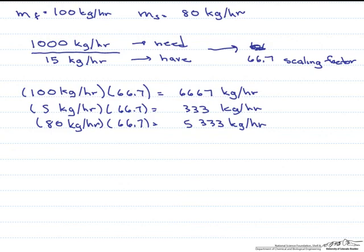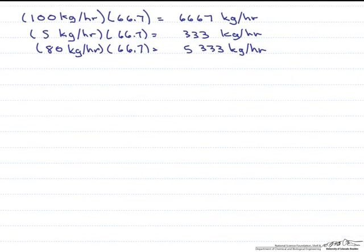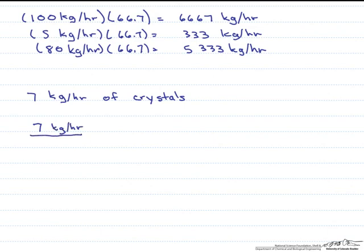What if instead though, your system was designed so you could only handle 7 kg per hour of crystals? Now what we have to do is scale down the system. So we take what we are going to need, which is 7 kg per hour of crystal, and divide it by what we got from our model, which is 15 kg per hour, and our scaling factor is 0.467.